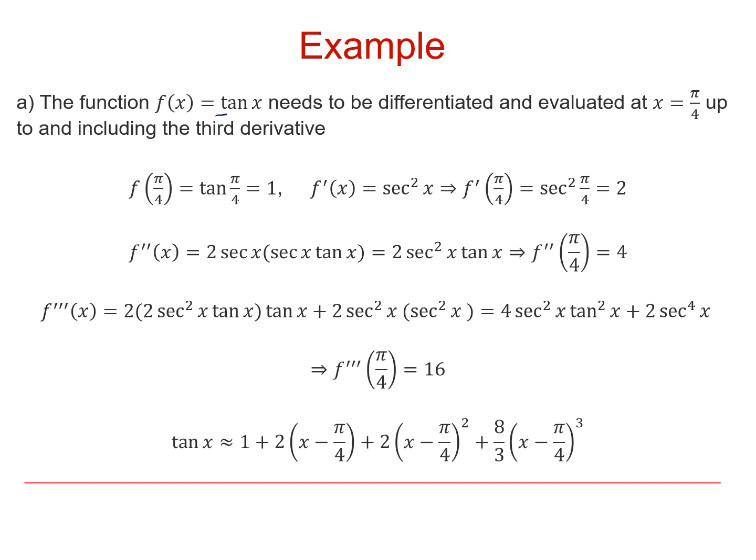For the first part of the example we need to evaluate tan x and its derivatives at the value x equals π over 4 and we need to go as far as the third derivative. So evaluating tan of π over 4 gives us 1. The derivative of tan x is sec squared x. Evaluating that at π over 4, well cos of π over 4 is 1 over root 2, so sec of π over 4 is root 2. Squaring gives us 2.